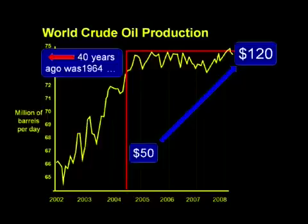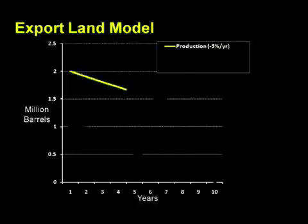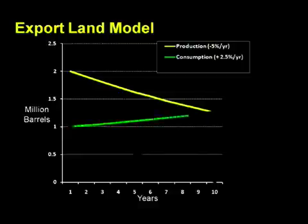Here's a very simple and clever way to think about the supply and demand problem, developed by a Dallas geologist named Jeffrey Brown, which he calls the export-land model. Suppose we have a hypothetical country that produces 2 million barrels of crude a day, but that is declining at 5% a year. We'd note that they'd be able to export 2 million barrels, and then after 10 years they would still be able to export 1.25 million barrels a day — this seems manageable. But now suppose that this country uses oil themselves, as all countries do, and they are consuming 1 million barrels a day, and this internal demand is itself increasing at 2.5% a year. This is also reasonable.